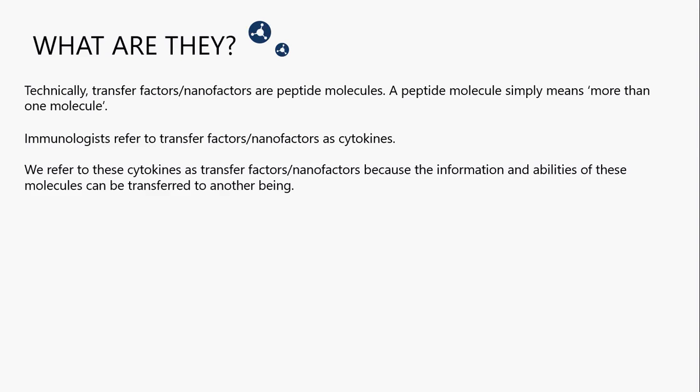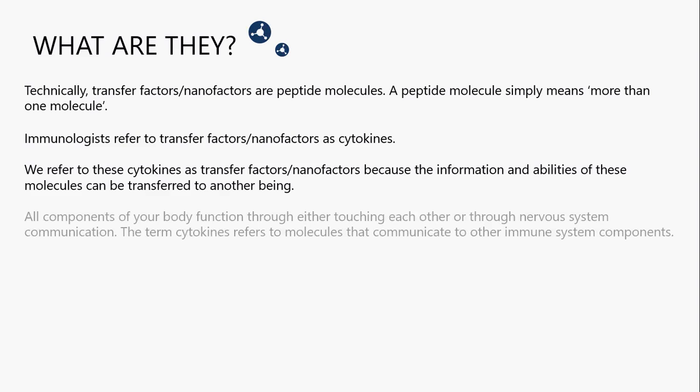In nature, one of the places you see this is when a mother nurses a child. When she gives birth, the first six to eight weeks after a child is born, the mother produces colostrum. During this time, the transfer factor is being transferred from the mother to the child. It's only available during the time she's producing colostrum. After about eight weeks or so, the mother begins to produce normal breast milk, and the transfer factors are no longer available.